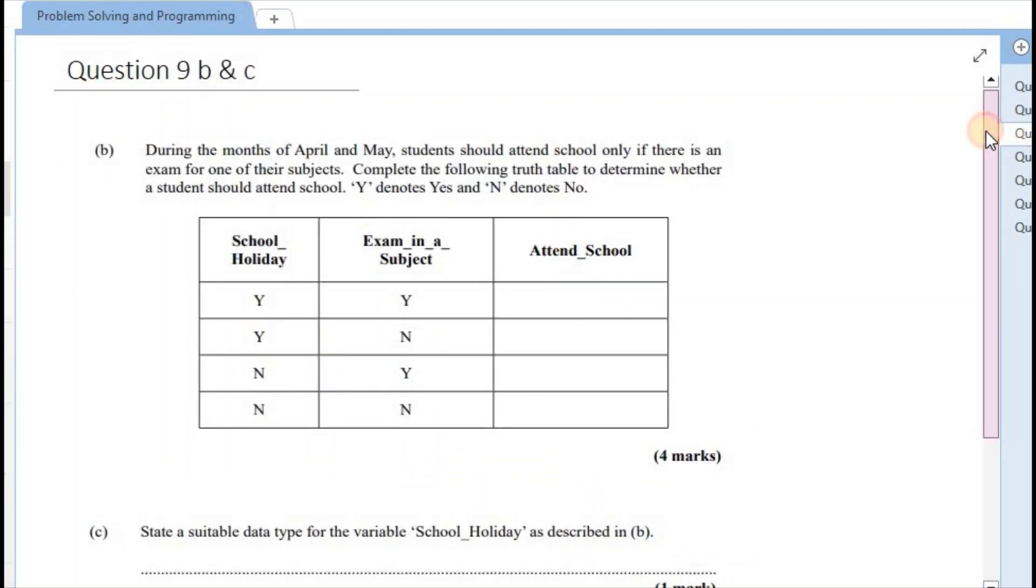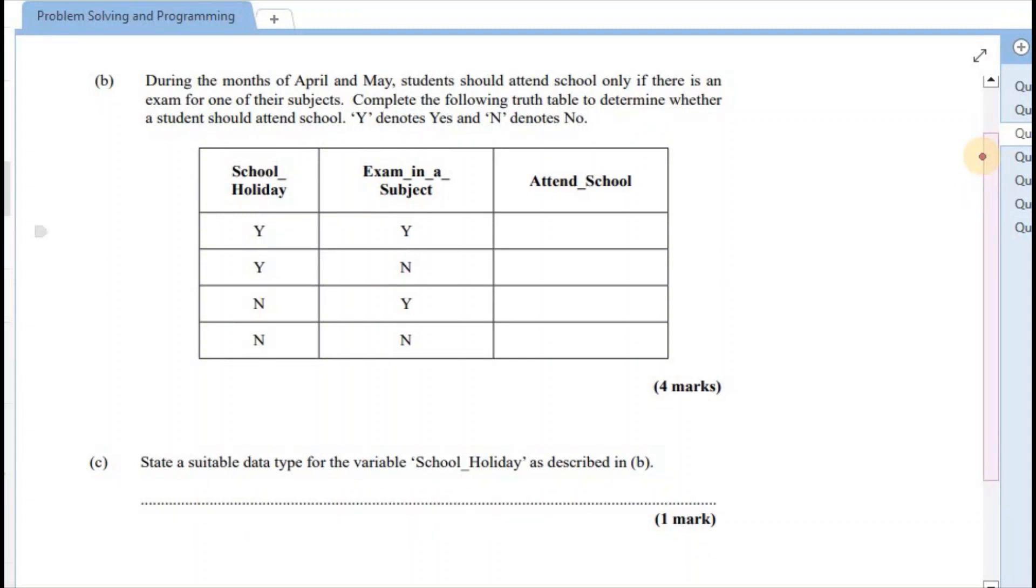We are presented again with a table, and the information says that during the months of April and May, students should attend school only if there is an exam for one of their subjects, right? So we ought to complete the following truth table to determine whether the student should attend school, Y for yes and N for no. So the criteria that we received is that the student attends school only if there is an exam for one of their subjects.